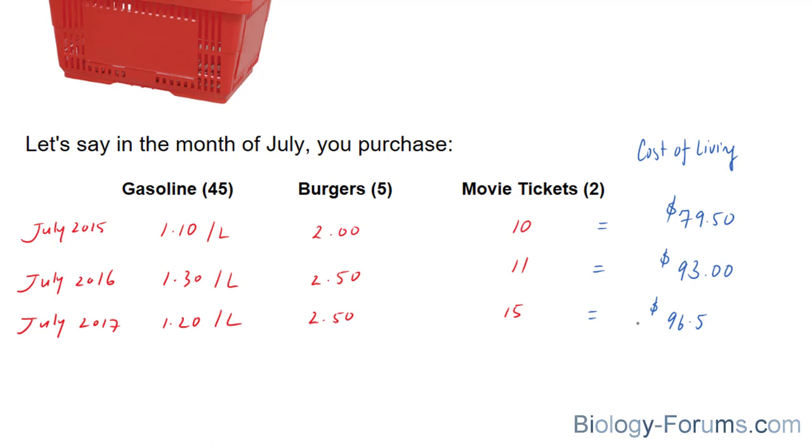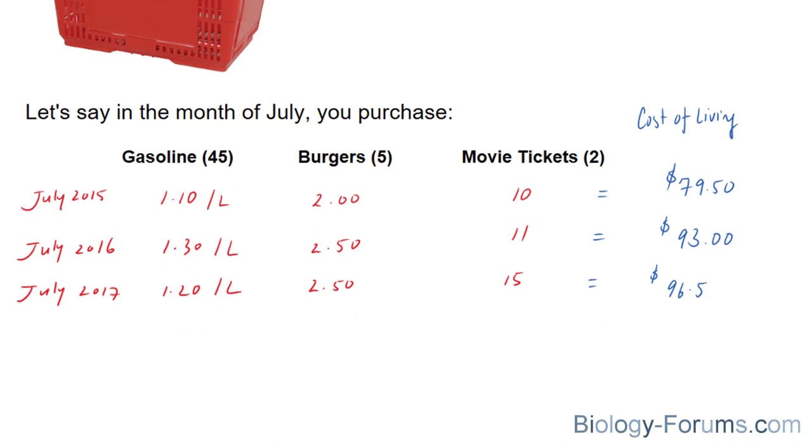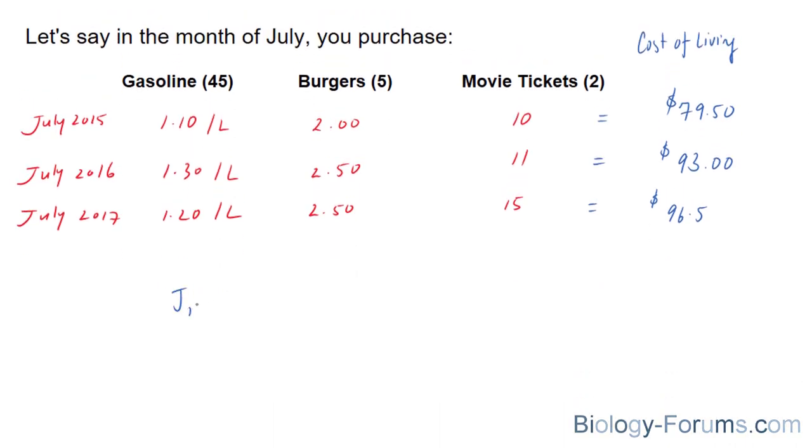So now that you've constructed this table, what we will do is rewrite what we found. So July of '15, July of '16, and July of '17, we end up with the following table summarized: $79.50, $93, $96.50. And what you'll do to come up with this index is you'll set this, the initial date, to $100. This will be your base value.